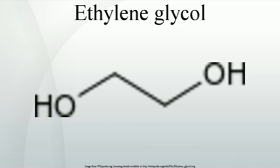Ethylene glycol is used as a de-icing fluid for windshields and aircraft. Its antifreeze capabilities have also made it a component of vitrification and anti-crystallization mixtures for low-temperature preservation of biological tissues and organs. The boiling point for aqueous ethylene glycol increases monotonically with increasing ethylene glycol percentage. Thus, the use of ethylene glycol not only depresses the freezing point, but also elevates the boiling point such that the operating range for the heat transfer fluid is broadened on both ends of the temperature scale.